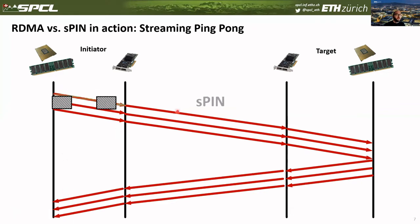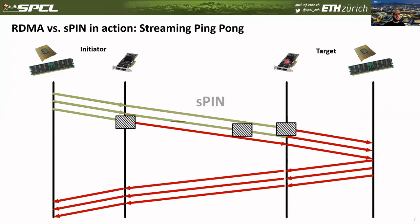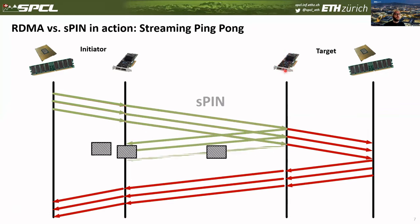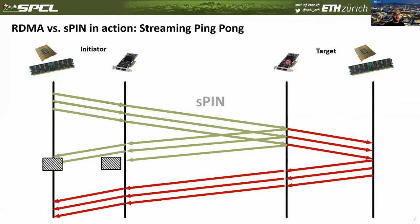Now, if we have SPIN, we could just install handlers on the target NIC in a way such that we can react on a per-packet basis, and closer to the network. So we don't only save the latency of going through the PCIe and the memory hierarchy, but also improve the throughput, because now we operate in a streaming fashion.